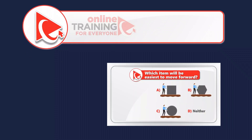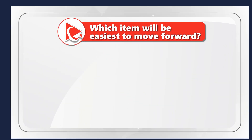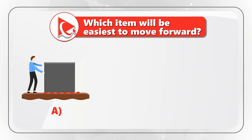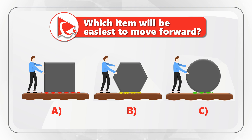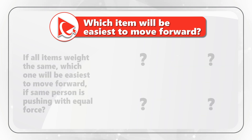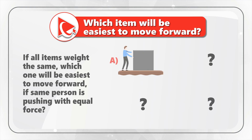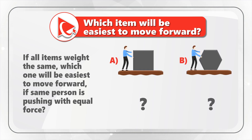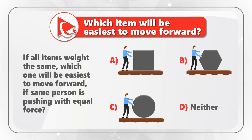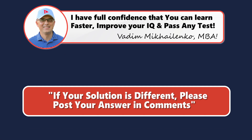Now I have a question for you to practice your skills. We have three different scenarios of a person moving an object — choices A, B, and C. If all items weigh the same, which object would be easiest to move forward if the same person is pushing with equal force? Select one out of four choices: A, B, C, or Choice D — neither one. Please post your answer in comments so I can give you my feedback. Thanks for participating and good luck.